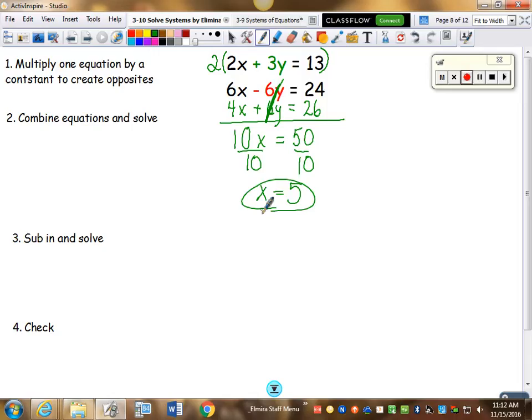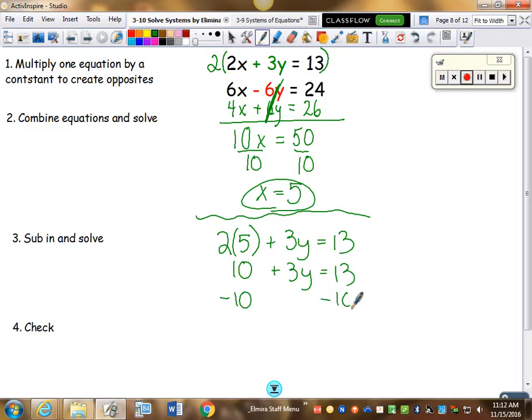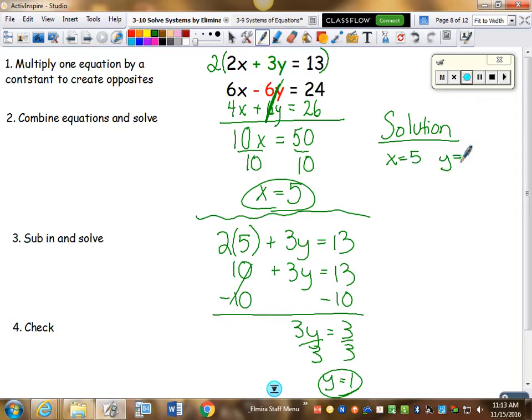I would pick an equation. That's phase 1. Phase 2, 2 times 5 plus 3y equals 13. So that's 10. Now I've got a 2-step. Divide by 3, y equals 1. So my solution is x equals 5 and y equals 1. If I wanted to write it in coordinate pair form, I could. Just make sure the x comes first and the y comes second.